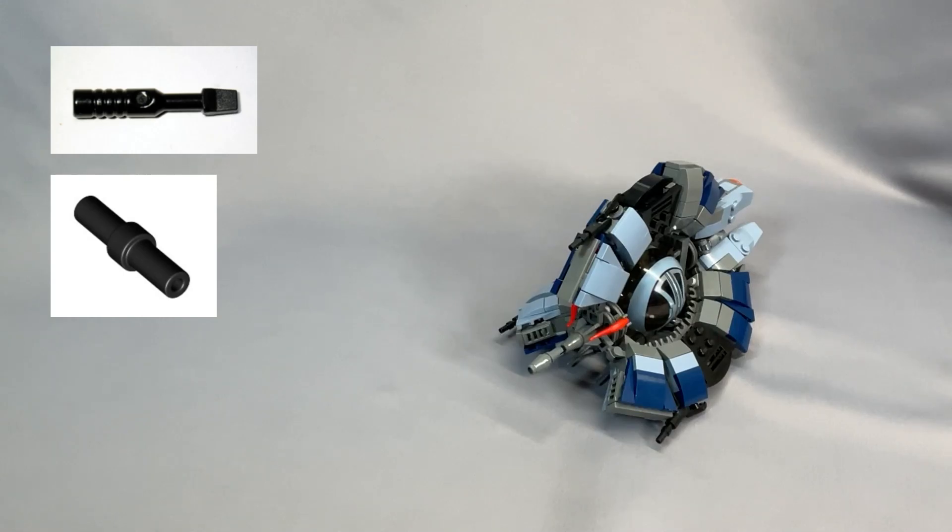And like I said earlier, you could substitute dark bluish gray for the bar 2L with stop ring if you wanted it to match the central cannon.